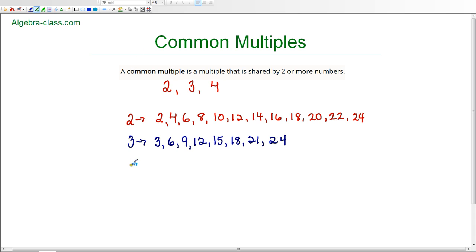Now we're going to do the same thing for four, the multiples of 4. 4 times 1 is 4, 4 times 2 is 8, 4 times 3 is 12, 4 times 4 is 16, we have 20 and 24.